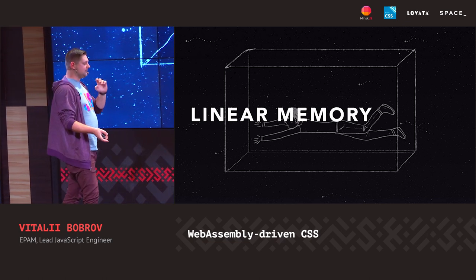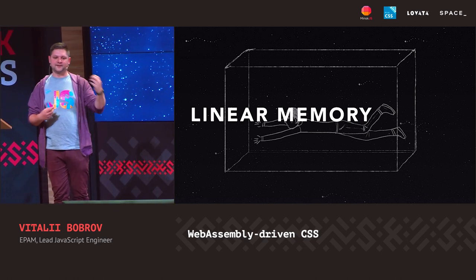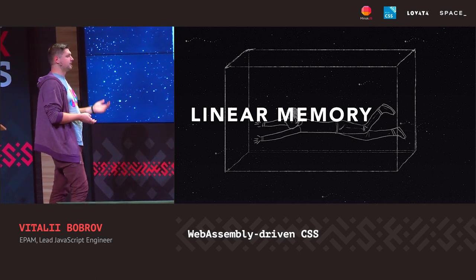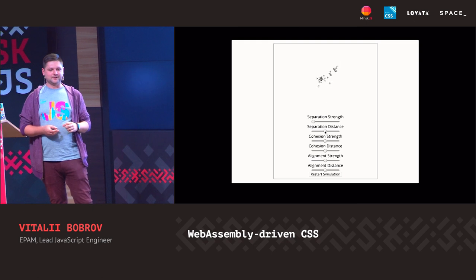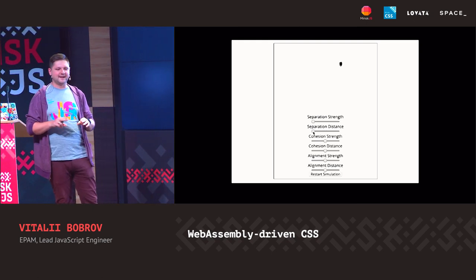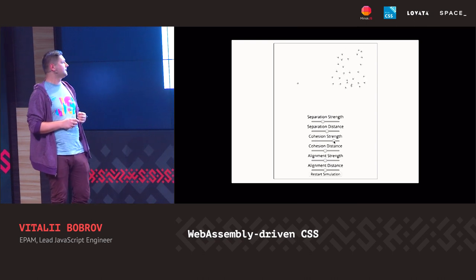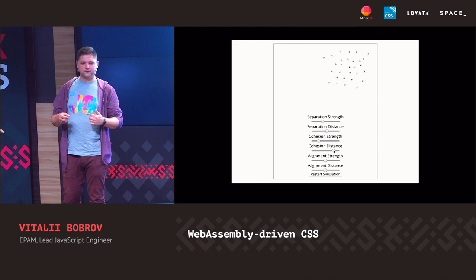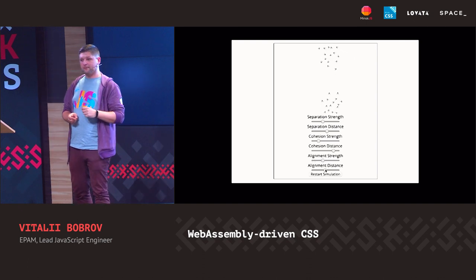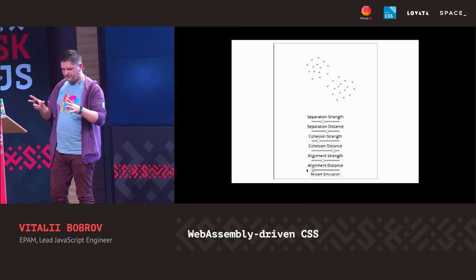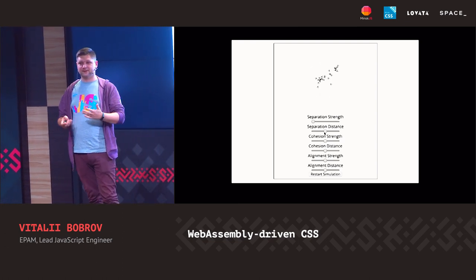This linear memory is the only mechanism by which we can interact between WebAssembly and the main thread code — we pass numbers and get numbers back, then decode and interpret them. For example, here is the flocking algorithm — we have these bug-like creatures rendered using Paint API Worklet on Canvas, with a bunch of properties to configure how big the distances between them should be, how they should align and behave. The state is updated on the WebAssembly side using an AssemblyScript-compiled module. It's quite performant, and it's hard to imagine what else we can create with that.